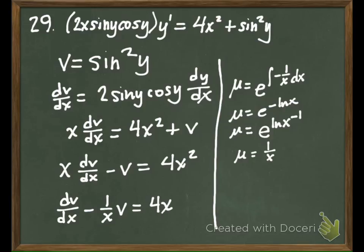Are we done with this page? All right, so when we multiply through, we're going to get 1 over x dv dx minus 1 over x squared v. And the other side, we just get 4.